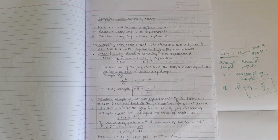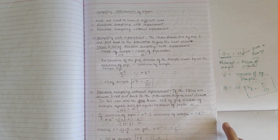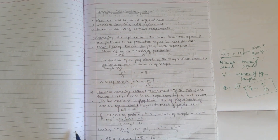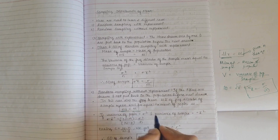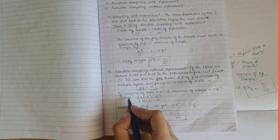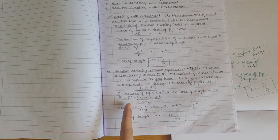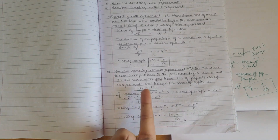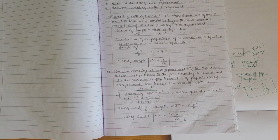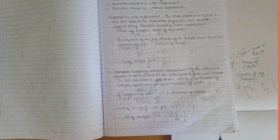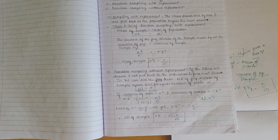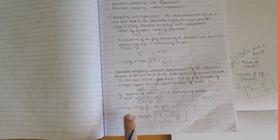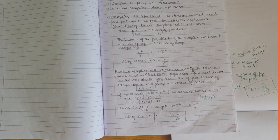Now looking into sampling without replacement: if items are drawn and not put back to the population before the next one is drawn, it is called random sampling without replacement. Here also the mean of the sample equals the mean of the population. For variance, there is a slight modification: sigma x squared equals (N minus n) divided by (N minus 1), multiplied by sigma squared over n, where capital N and small n are two different entities. Taking the square root gives the standard deviation.